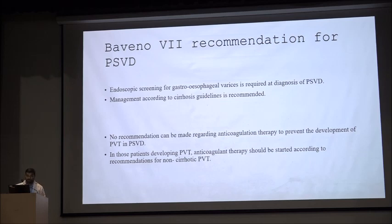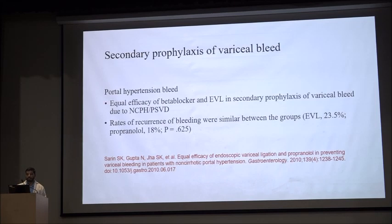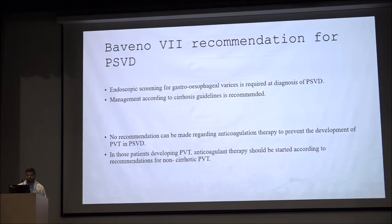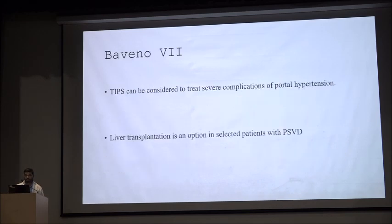Regarding management, Baveno 7 states that endoscopic screening for gastroesophageal varices is required. Management of portal hypertension in PSVD is similar to cirrhosis. Studies have shown that in secondary prophylaxis of variceal bleed in non-cirrhotic portal hypertension, recurrence rate was similar between propranolol and EBL groups. No recommendation can be made regarding anticoagulation to prevent PVT in PSVD; however, in patients developing PVT, anticoagulation should be started per recommendations for non-cirrhotic portal vein thrombosis. TIPS can be considered for severe complications, and liver transplantation is an option in selected patients.